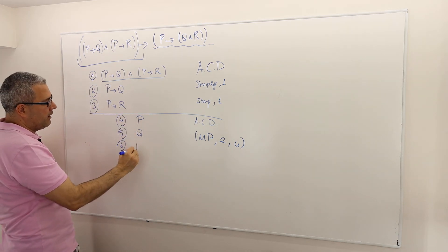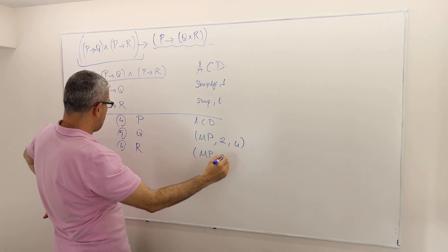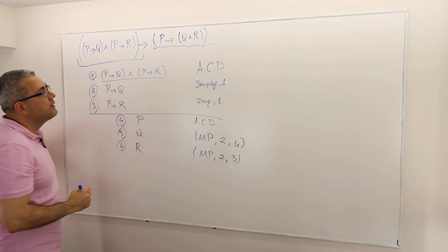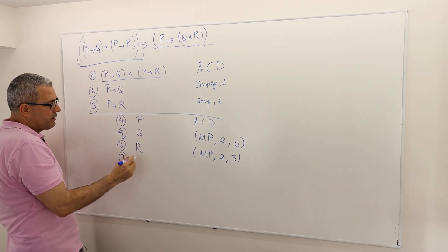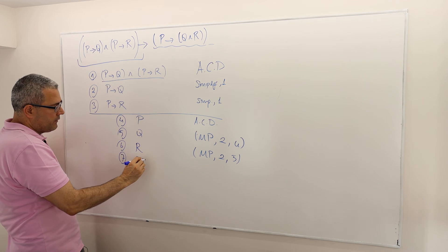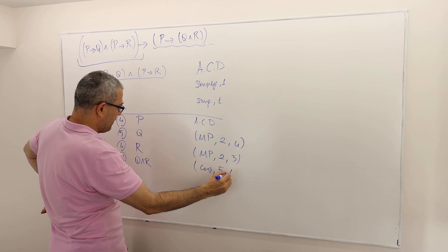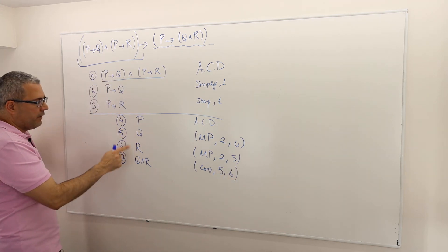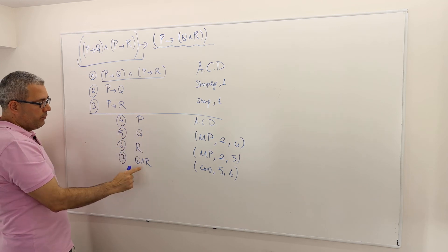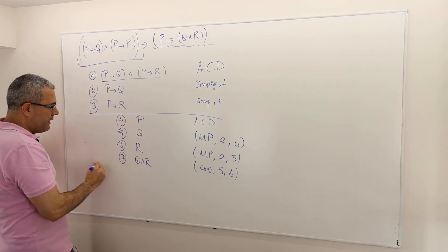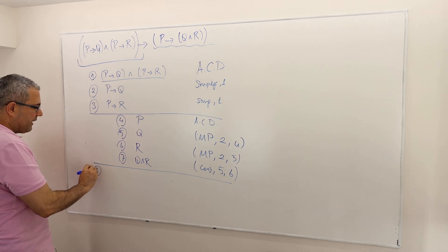P implies R and P — R must be true. This is modus ponens between arguments three and four. I have both Q and R true, so I combine them — Q and R is also true. This is the conjunction rule between arguments five and six. If P is true, Q and R is true. Now I close this box and safely say this argument must be true whether P is true or not.